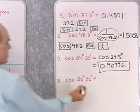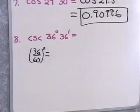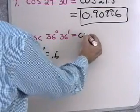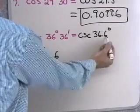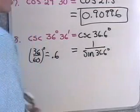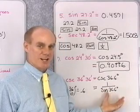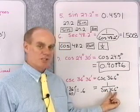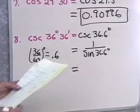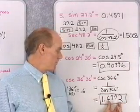For cosecant of 36 degrees 36 minutes: first change 36 minutes to degrees — 36 divided by 60 is 0.6 degrees — so this is cosecant of 36.6 degrees. Since there's no cosecant button, use the identity: cosecant equals 1 over sine of 36.6 degrees. Find the sine of 36.6 degrees and take the reciprocal. The answer is 1.6772 to four decimal places. These basic identities come up over and over in trigonometry.